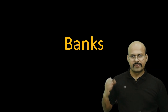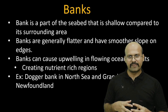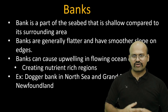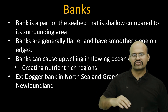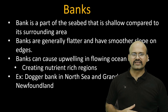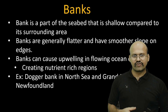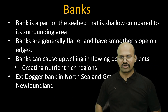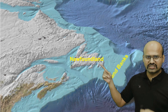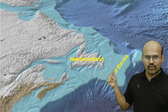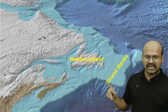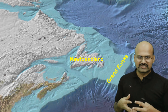Banks are parts of the seabed that are shallow compared to their surrounding area. The depth of the ocean at a bank is very low compared to surrounding regions, and they are very flat like a plateau with smooth slopes on the edges. Banks generally cause upwelling of water, making them nutrient-rich regions with abundant fish. The Dogger Bank in the North Sea and the Grand Bank in Newfoundland are examples. They are flat and have smooth slopes compared to a seamount or volcanic mountain.